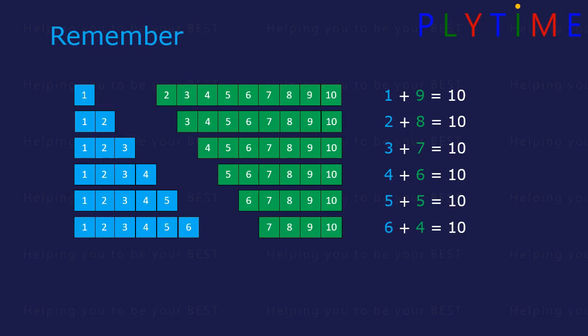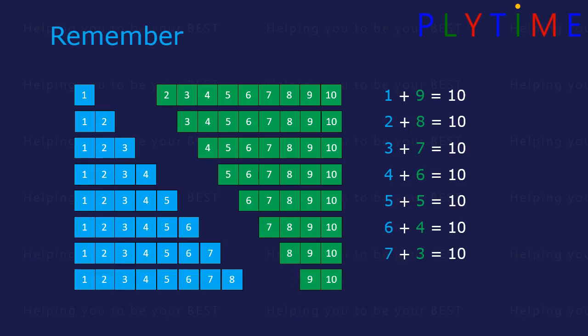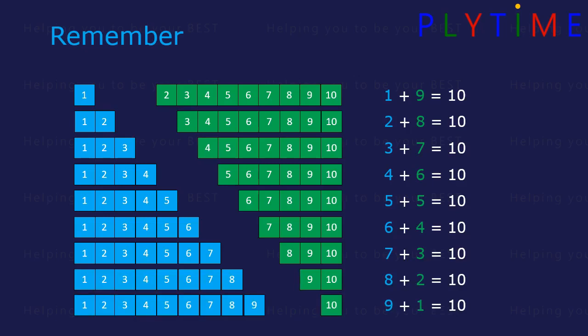7 plus 3 equals 10. 8 plus 2 equals 10. And 9 plus 1 equals 10. Use your fingers to remember these number bonds.